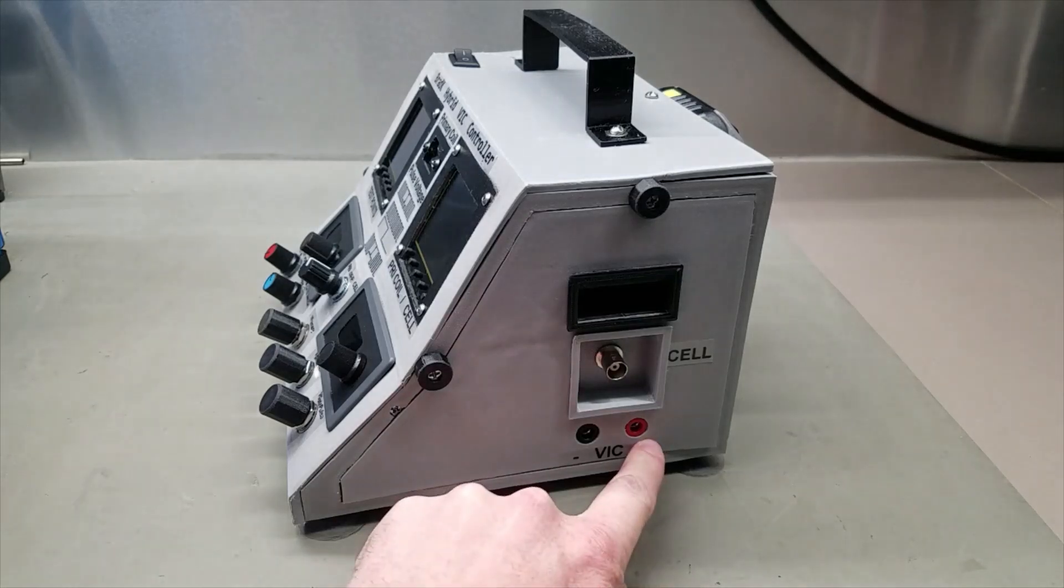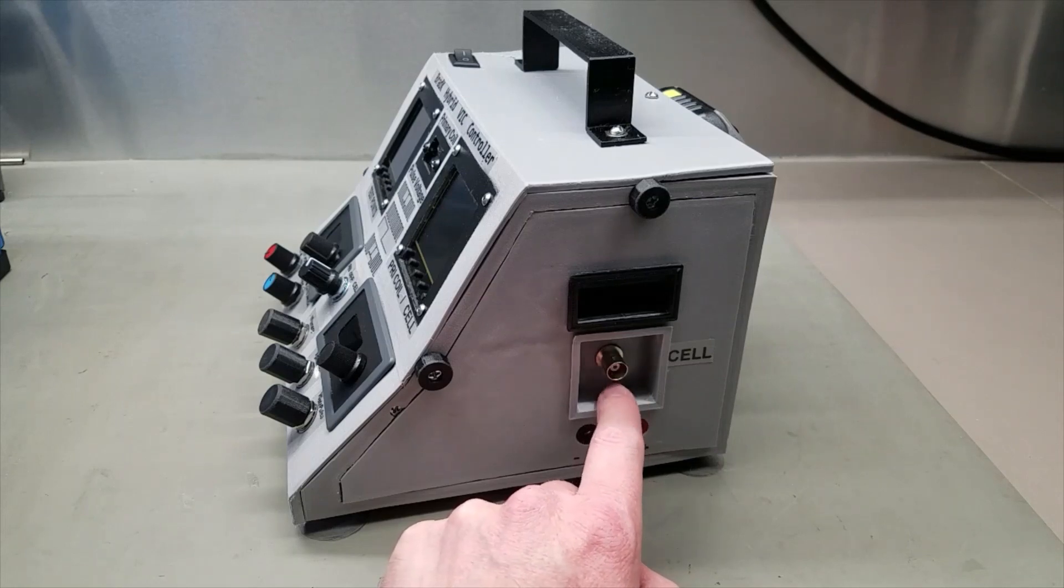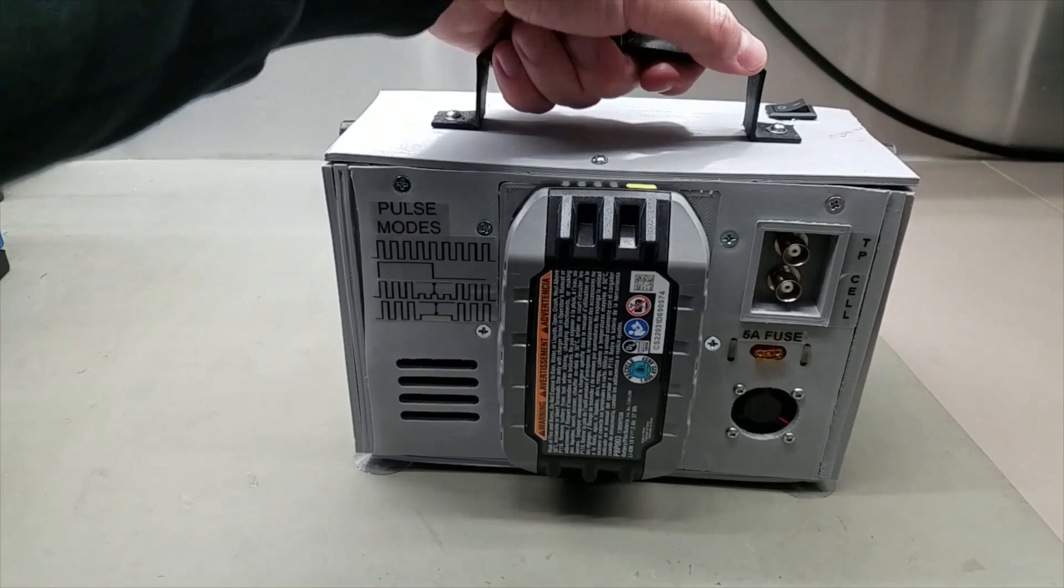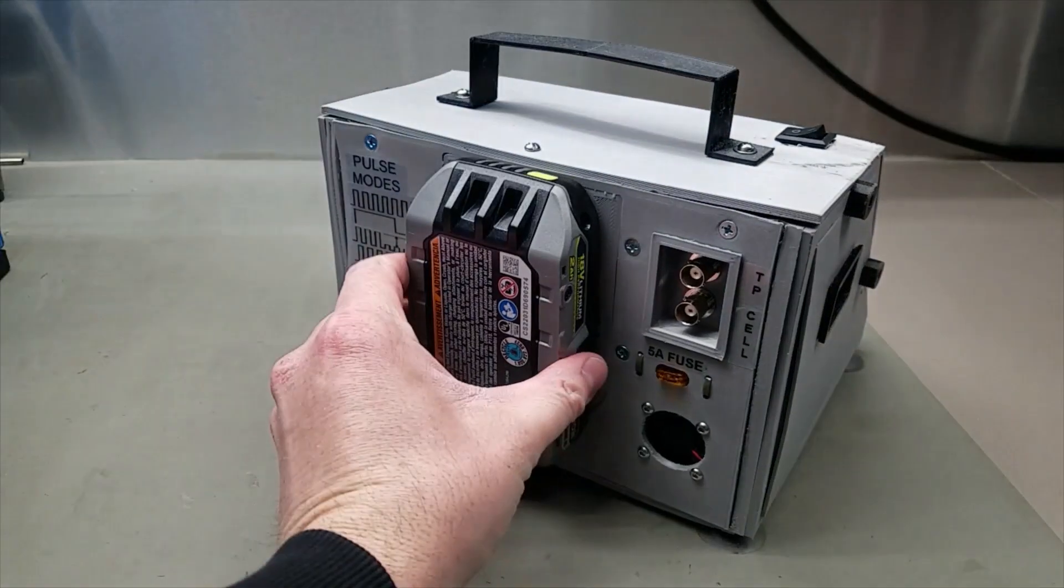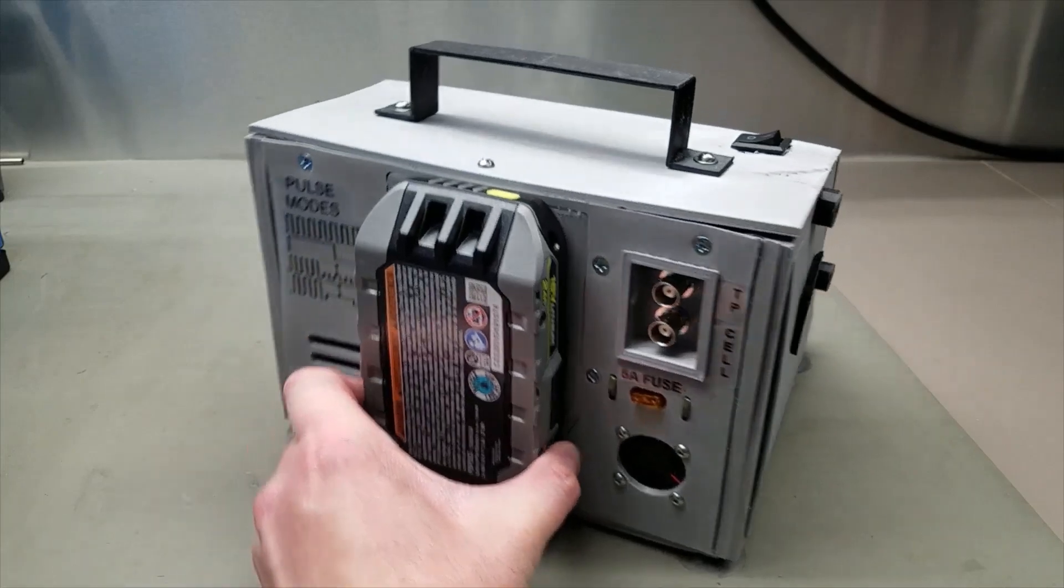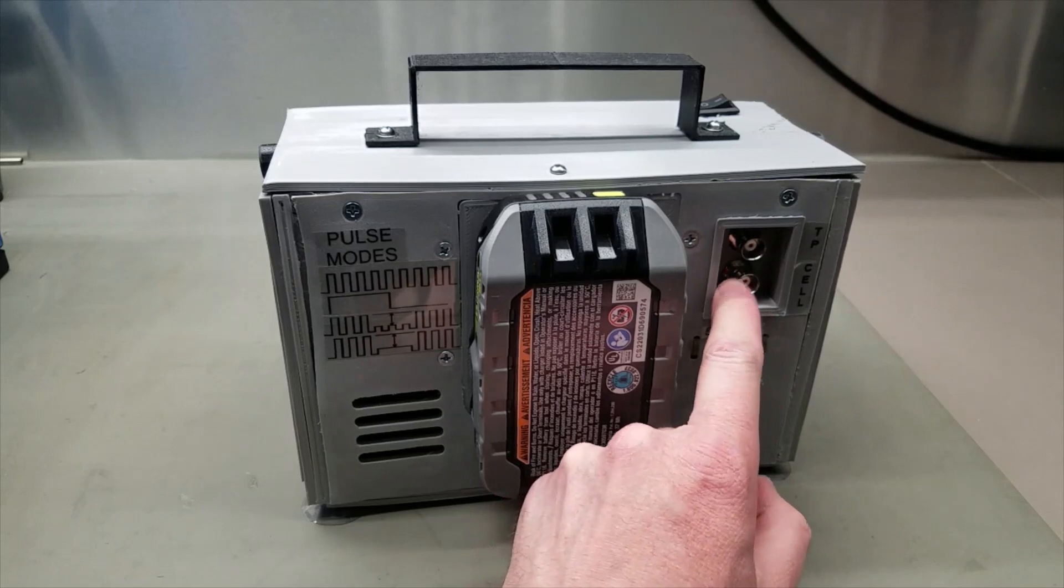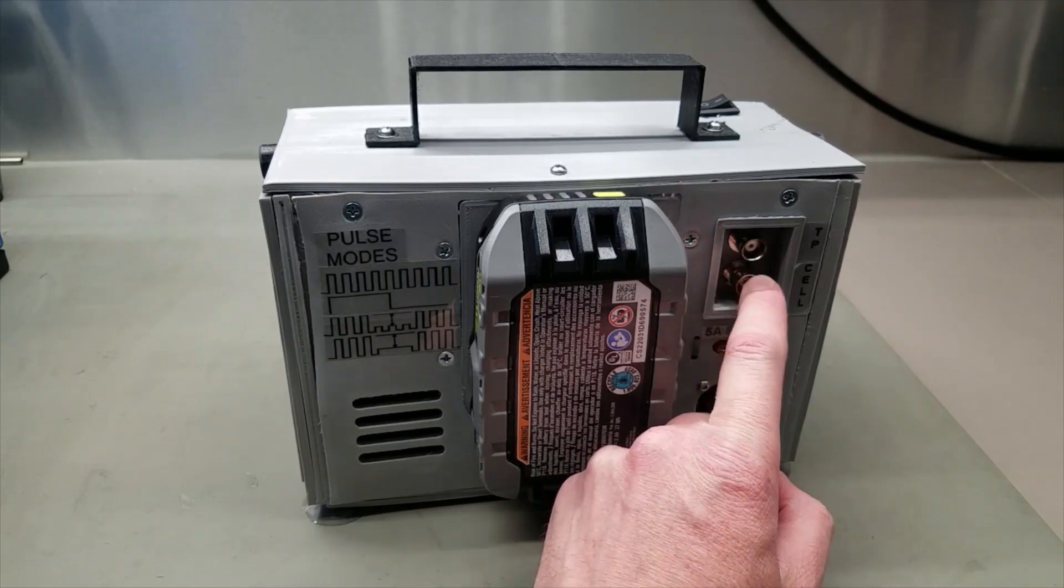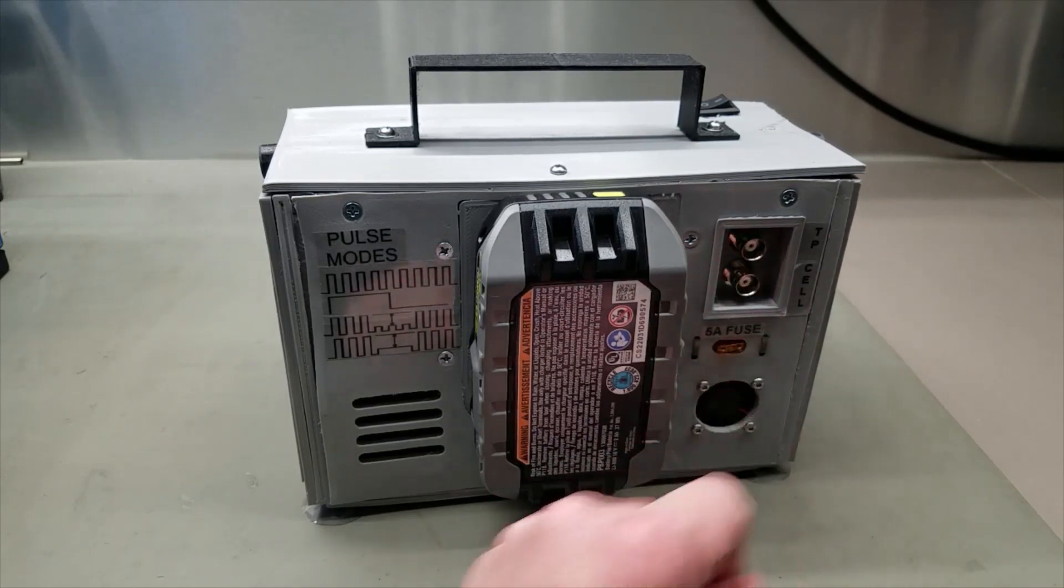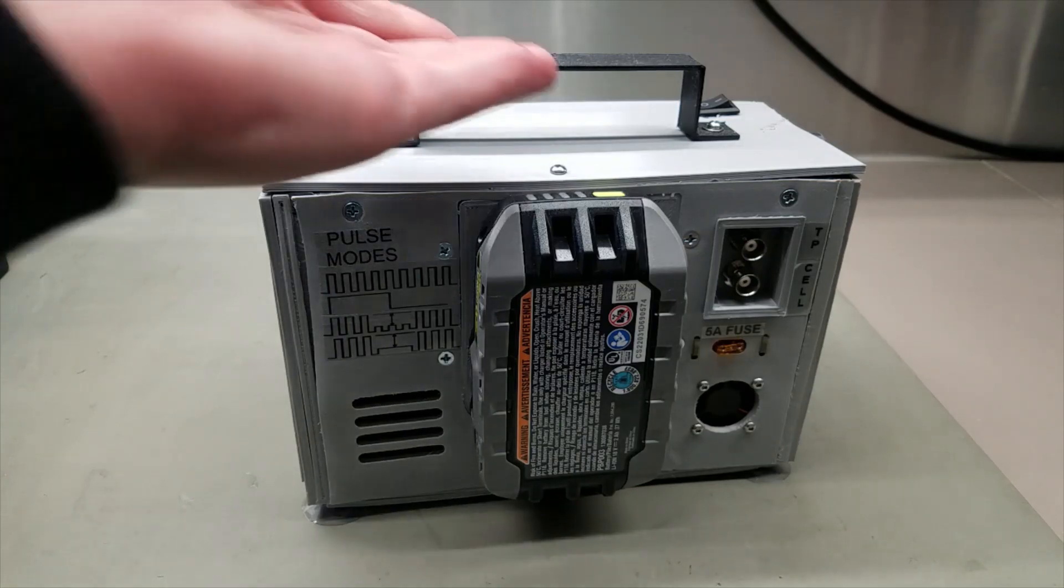On the side, I've got my VIC connections. I've got this connection here labeled cell. This actually connects to a pickup coil that sits between the VIC and the water fuel cell. Now here on the back, this whole thing is run by an 18-volt Ryobi power tool battery, so it's all cordless. I've also got a 5-amp fuse and a fan. And here I've got two BNC connections. These are actually extensions, so if I want to look at the waveforms on a bigger and better oscilloscope, I can connect it there.